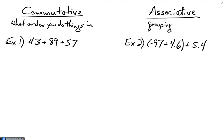Now remember, the commutative property has to do with the order that you do things in. And the associative property has to do with grouping. And generally, grouping means you're dealing with parentheses.